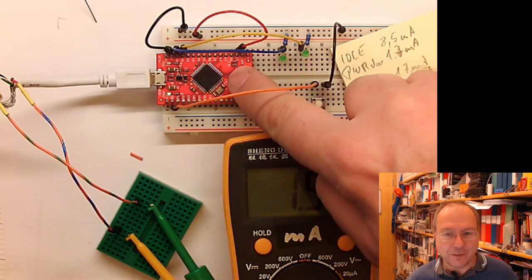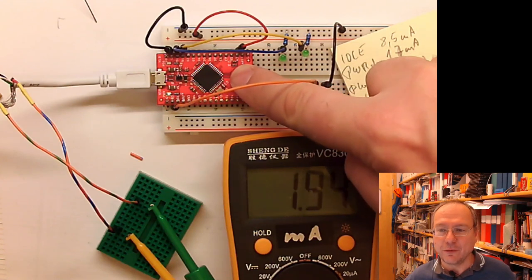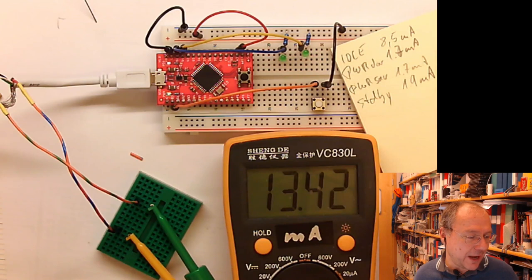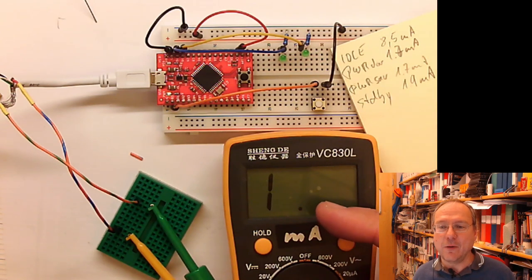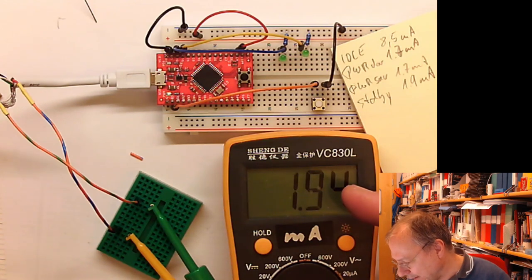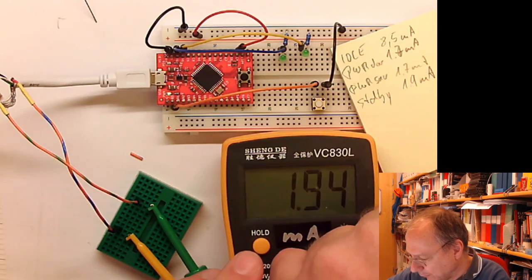And this was actually quite interesting. I saw it when I programmed it. So I put it into programming mode and now we are at 12, 13 milliamps. And now I will actually - now I'm actually programming and now it exceeds the range when it actually flashes the new code into the microcontroller. I would have to switch to 200 milliamps on the multimeter.